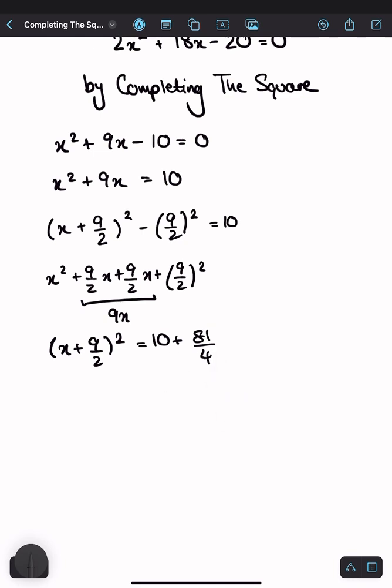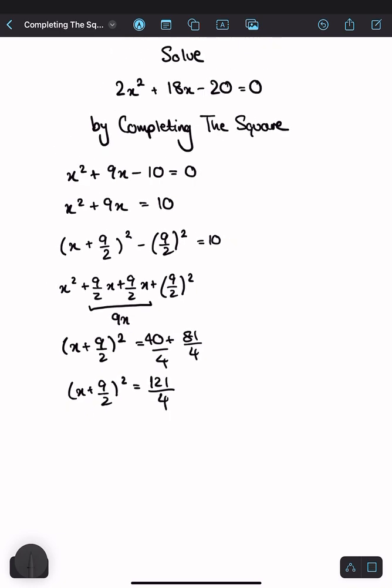Now let's simplify the expression. You get x plus 9 over 2 squared equals. This would become 40 over 4. That would be 121 over 4 when adding them. And because we're solving for x,